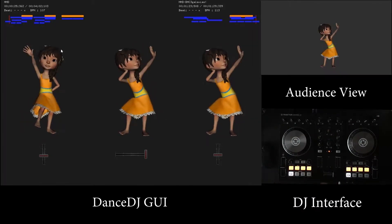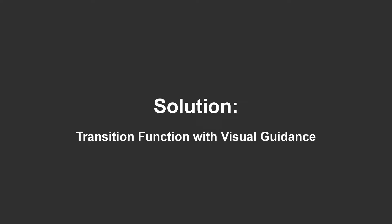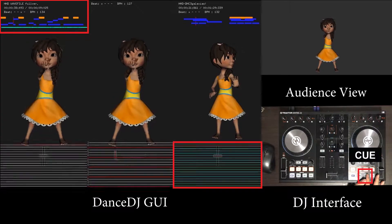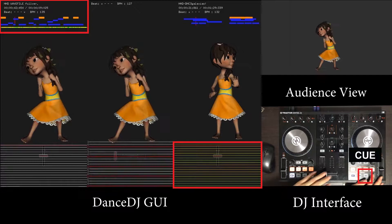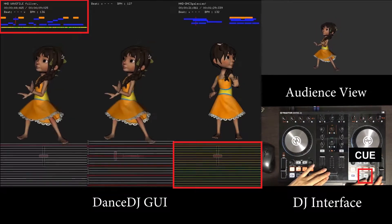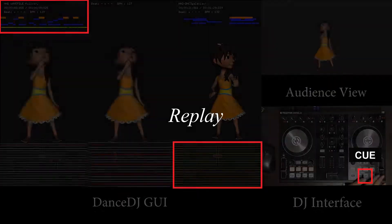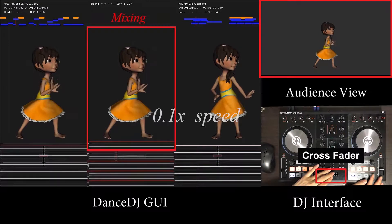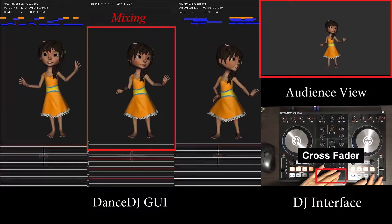We found that it is difficult to transition between different dance motions. When the user pushes Q, the possibility of a smooth transition is visualized as numerous color bars. We show the transition result with a color from blue to red. Red is the highest possibility for smooth transition. While checking the transition function result, the user selects a transition point.